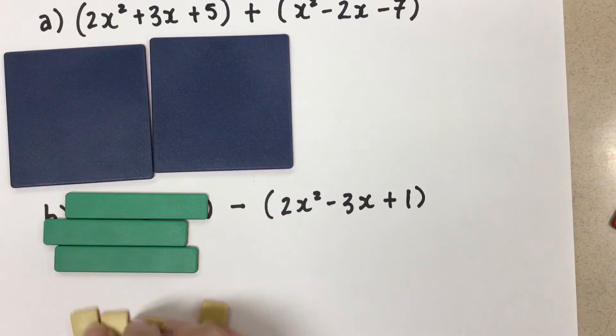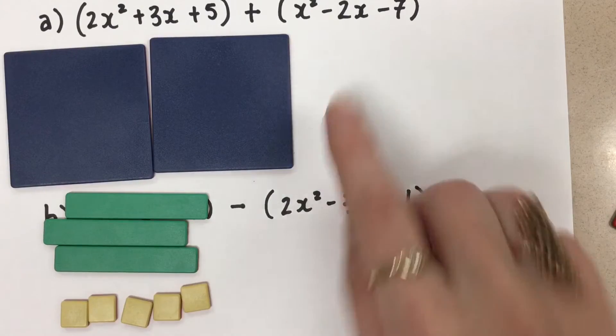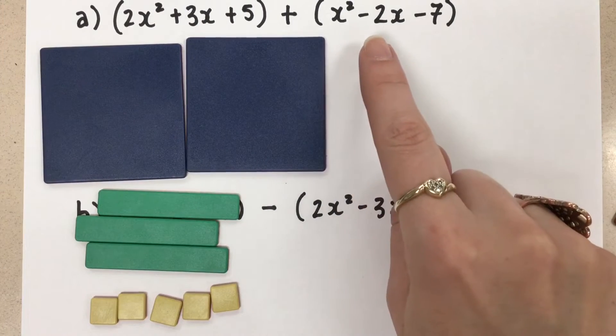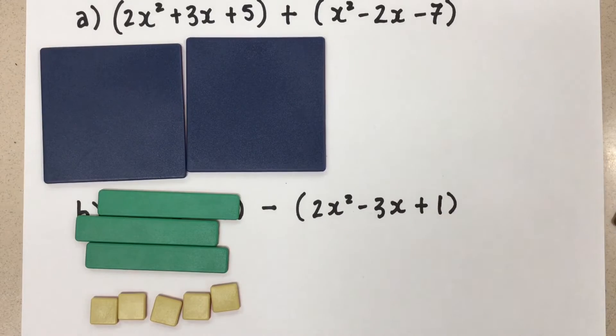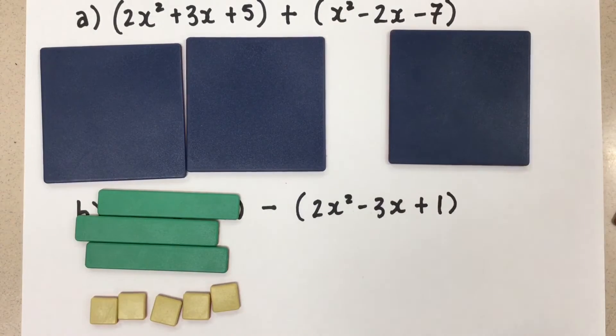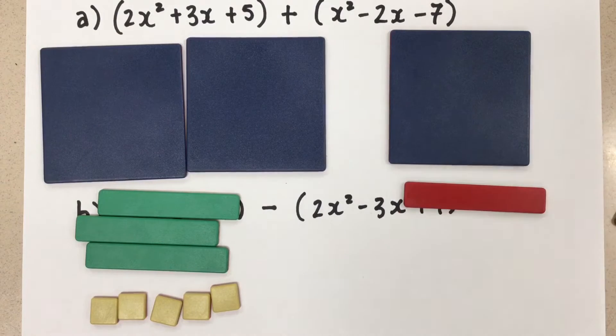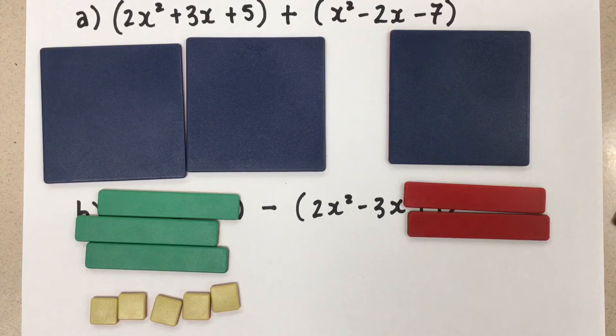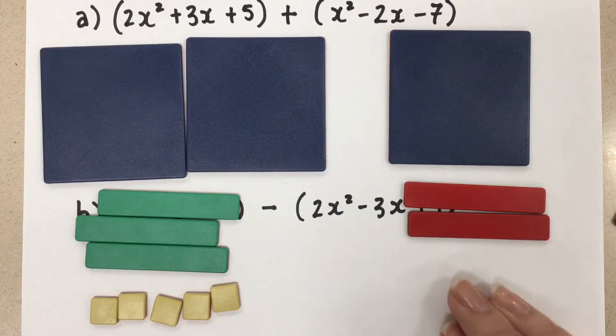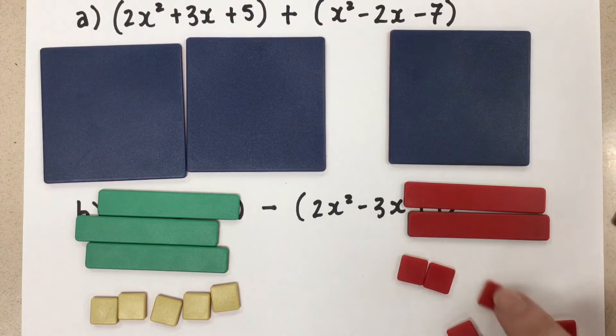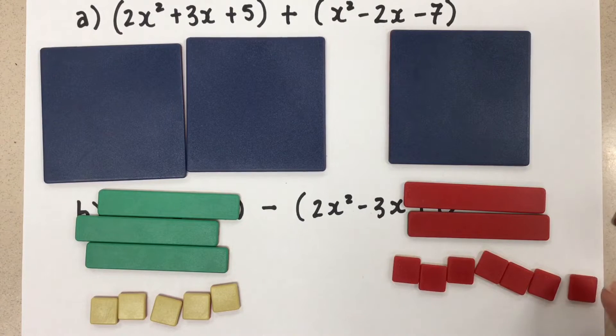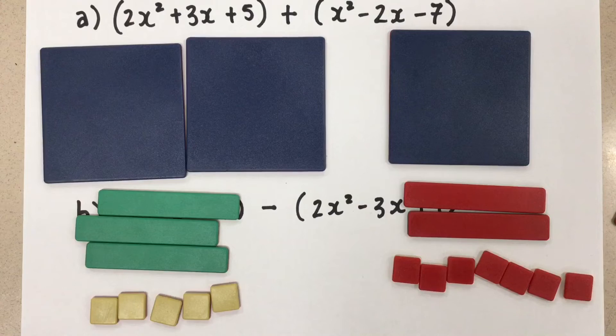Now we want to get all of the algebra tiles that represent the second polynomial here. So the second polynomial, x squared minus 2x minus 7. So we'll start with an x squared. And then minus 2x, we need the red side of the x's. So there's minus 2x. And then we need minus 7, so we need negative 7 ones. There we go.